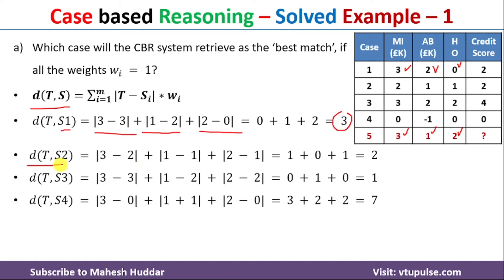Similarly, we calculate d(t, s2). t = [3, 1, 2] and s2 = [2, 1, 1]. So: |3-2| + |1-1| + |2-1|, with w_i = 1 everywhere. Solving this gives d(t, s2) = 2.